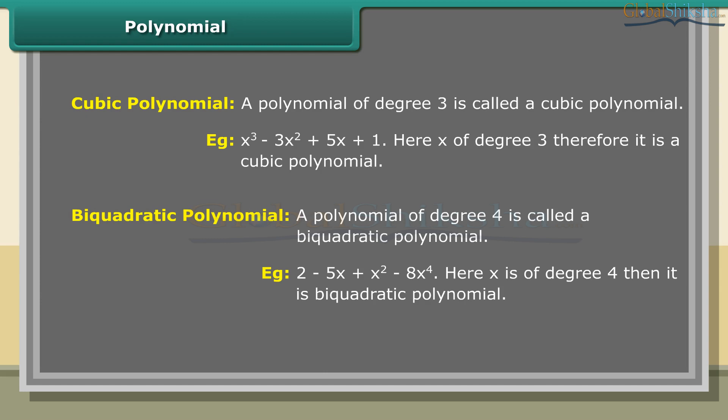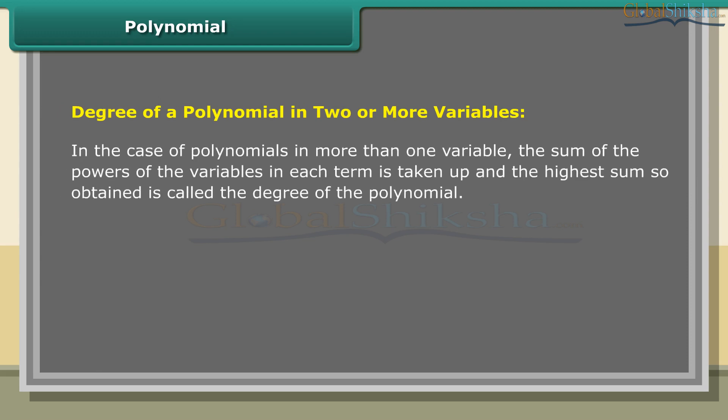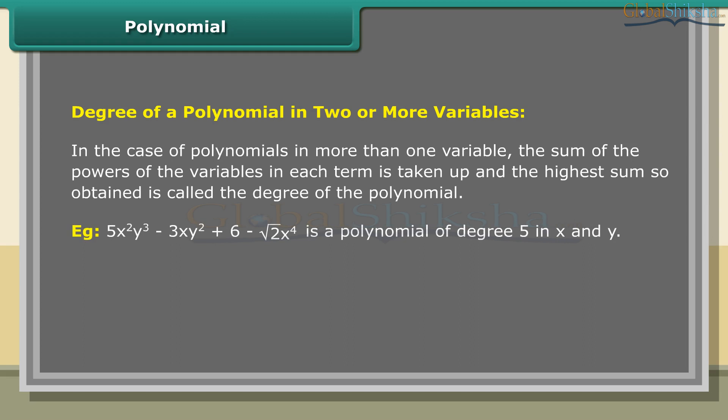For polynomials in more than one variable, the sum of the powers of the variables in each term is taken, and the highest sum so obtained is called the degree of the polynomial. Example: 5x²y³ minus 3xy² plus 6 minus √2 x⁴ is a polynomial of degree 5 in x and y.